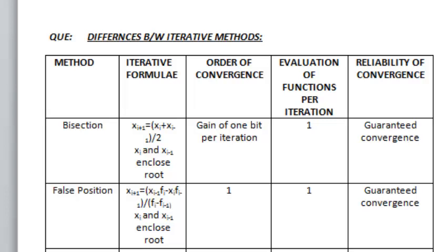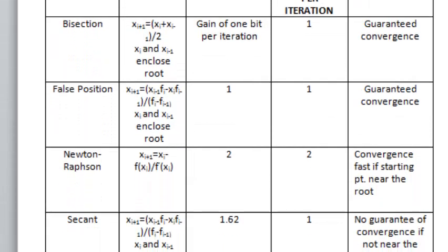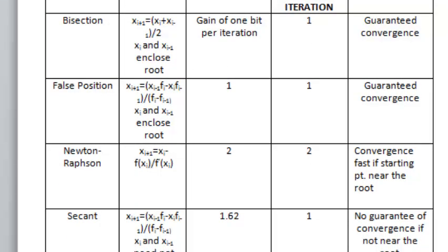For false position method, also known as regular falsi method, xi+1 equals (xi-1 into fi minus xi into fi-1) divided by (fi minus fi-1), where xi and xi-1 enclose the root, same as bisection.